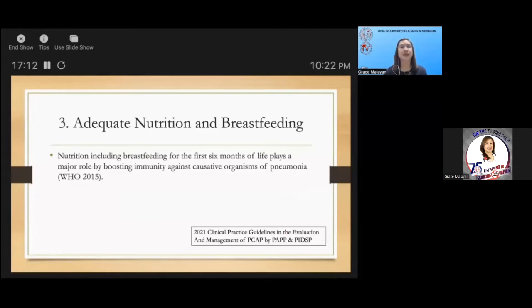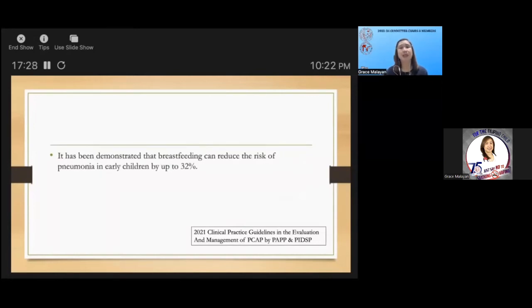Of course, we cannot discount the importance of adequate nutrition and breastfeeding. Nutrition, including breastfeeding for the first six months of life, plays a major role by boosting immunity against causative organisms of pneumonia. It has been demonstrated that breastfeeding can reduce the risk of pneumonia in children up to 32 percent.